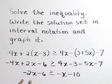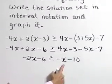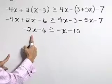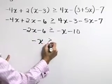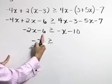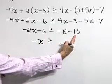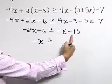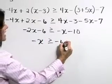Now let's collect our x terms on the same side by adding x to both sides. Negative 2x plus x is negative x. And at the same time, let's move our numbers to the right-hand side, adding 6 to both sides. So negative 10 plus 6 is a negative 4.